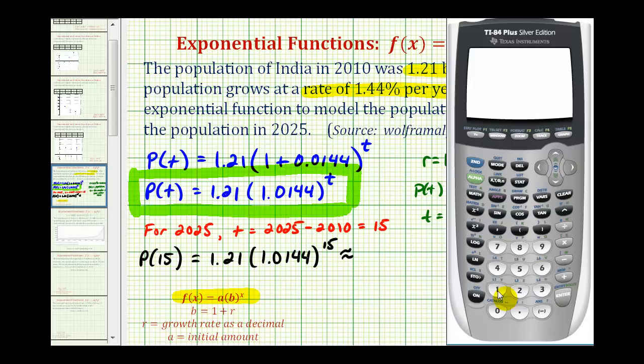Now we'll go to the calculator. So we have 1.21 times 1.0144 raised to the 15. If we round this to two decimal places, we can say that the population will be approximately 1.50 billion.